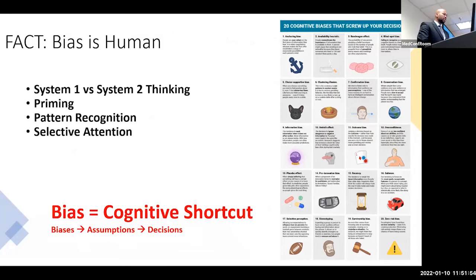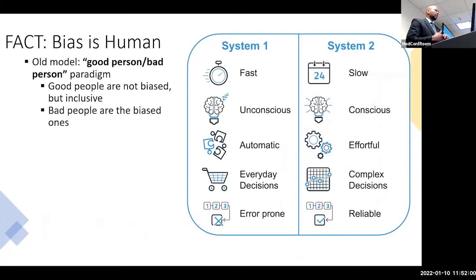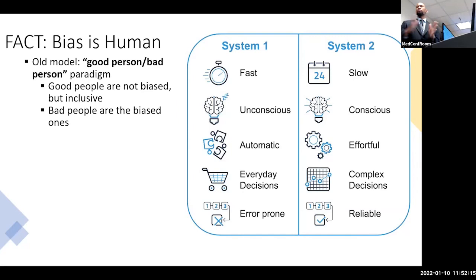The first topic is System 1 and System 2 thinking. Our brains are really operating on two systems. The old model is that bias is bad, and good people just don't have biases — I treat everybody the same, so let's stop talking about this. The reality is that's impossible. The way our brains develop and operate, we are in either System 1 or System 2 thinking most of the time. System 1 is this fast, unconscious, automatic way of being — you driving into work at this point, you don't have to actively think about it.